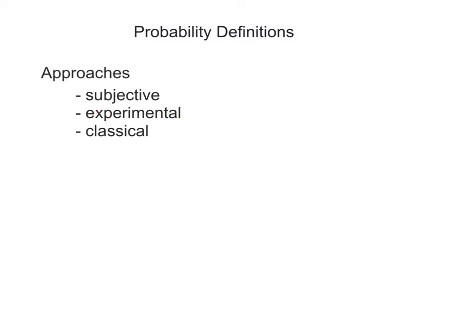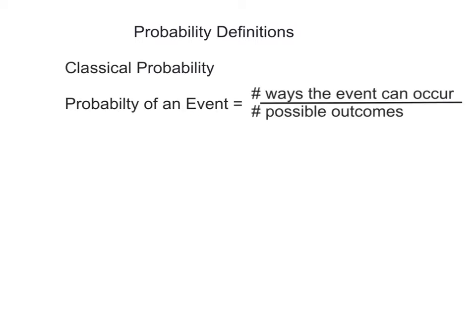The next approach is the experimental approach, and this works well for things that we could repeatedly do over and over, such as something at a roulette wheel. An experiment we can run repeated times and then have statistics and say whether or not things are statistically probable. But not everything can be run as an experiment over and over. Then we have the classical approach, which is what we will be using in this video. In the classical approach, the probability of an event occurring is the number of ways an event can occur divided by the total number of possible outcomes.